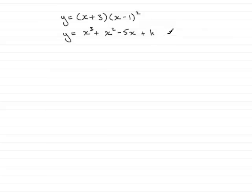So how do we do this? Well first of all let's just write down what y equals again. So y equals x plus 3 multiplied by x minus 1 all squared. So what I'm going to do is just multiply out this last bracket here.